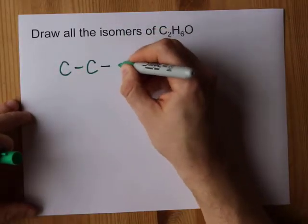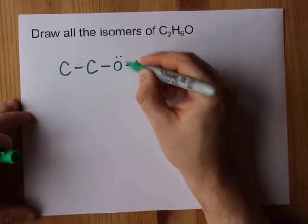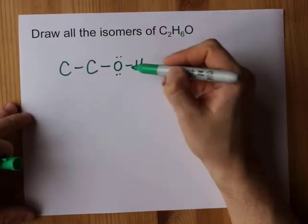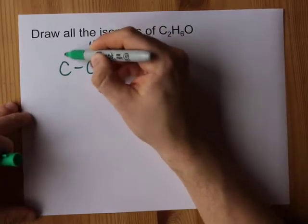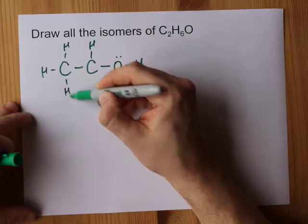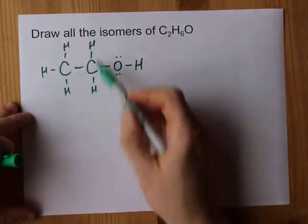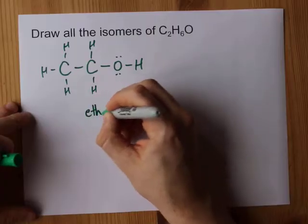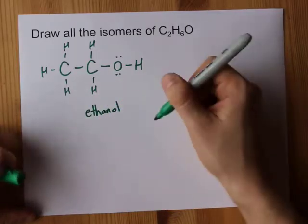If I put the oxygen on one of the carbons here, I'll even draw the lone pairs — that gives us six hydrogens total, making C2H6O. This is actually just ethanol, or ethane-1-ol.